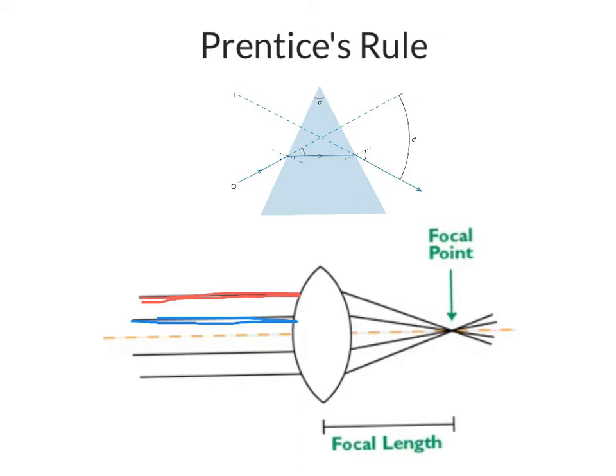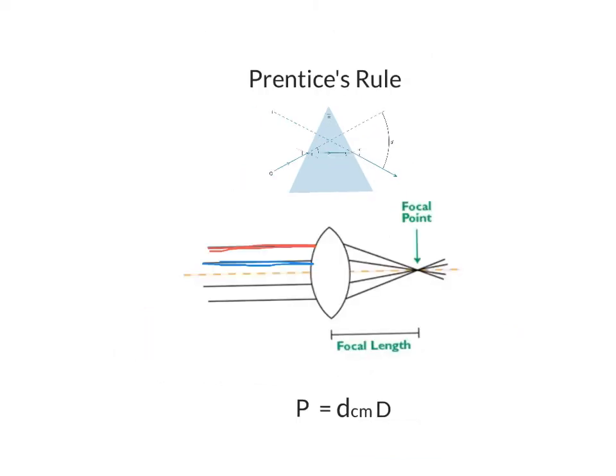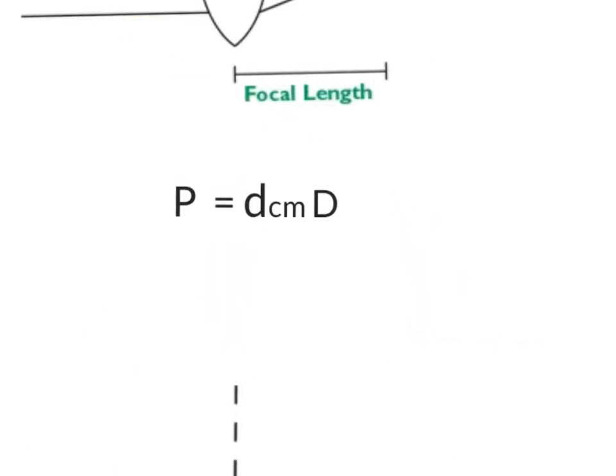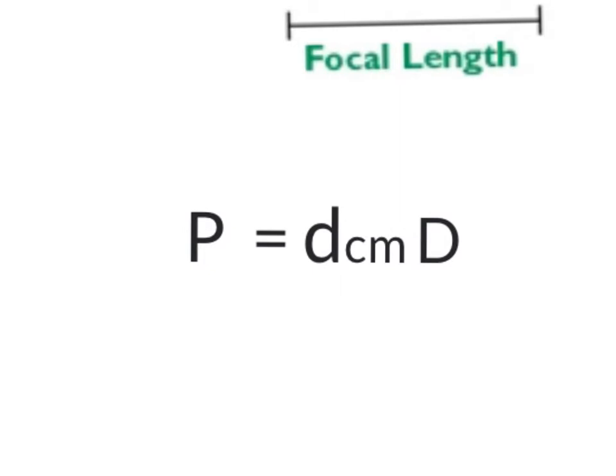So what is Prentice's Rule? Prentice's Rule is simply just P equals d centimeters times D. Sometimes you might see the d written as a C. It's the same thing, same concept.